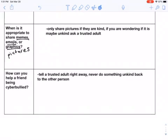Tell a trusted adult right away. Never do something unkind back to the other person. Just like in real life, if someone is doing something super mean to you, go get help. You never want to do it right back to them.